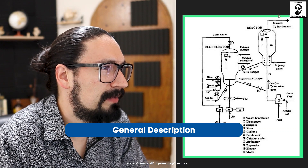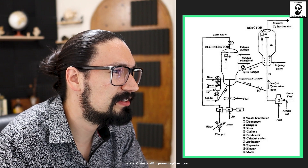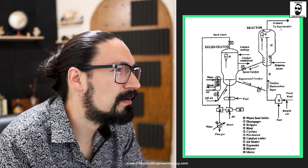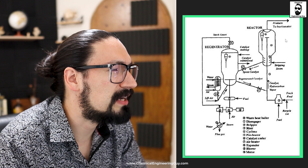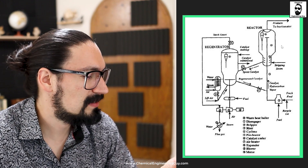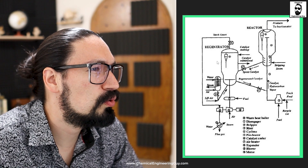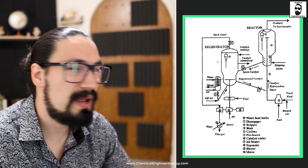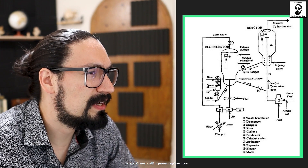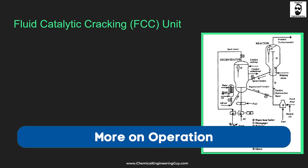Here is a diagram. We have the reactor, the regenerator, and the riser. The most important part is the products that go on to fractionation, where we recover many types of products — natural gases, but more importantly gasolines, diesels, and so on. This is by definition a catalytic reactor because we have a catalyst, a fluidization system, and a regenerator to ensure we are recovering the catalyst. These are the main components.